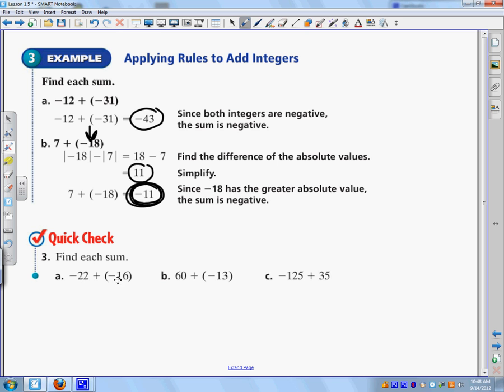So two negatives, what I do is I add them together to get 38, and then I keep the negative sign. Because two negatives make a negative in addition. Now this is a 60 plus a negative 13. So what you do is you subtract those two numbers to get 47. And then I look, is 60 larger or 13 larger? Well, 60 is larger, so I keep the sign of the bigger number, which is positive. So it's a positive 47. And then lastly, I have negative 125 plus 35, and those are separate, different signs. So I subtract them, and I get 90. And then I look, is 125 larger than 35? Yes. So my answer is negative, because I keep the sign of the larger number.